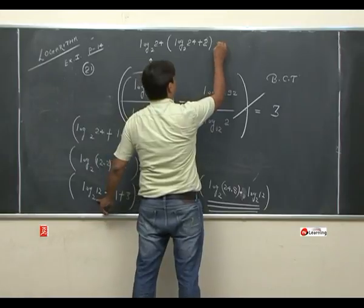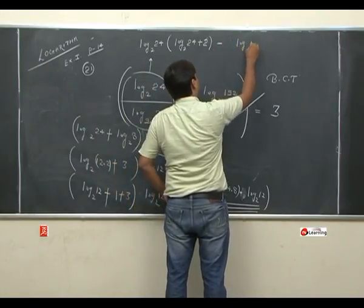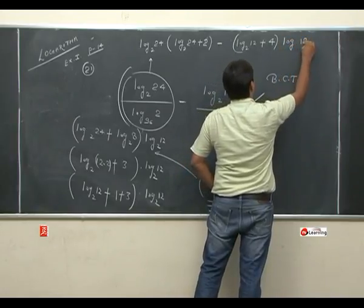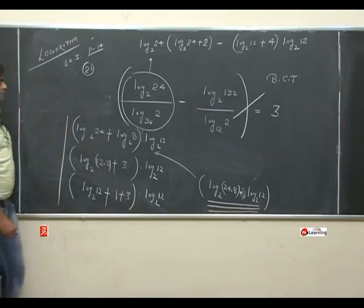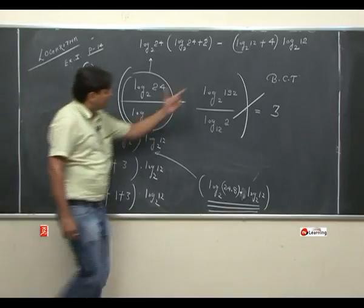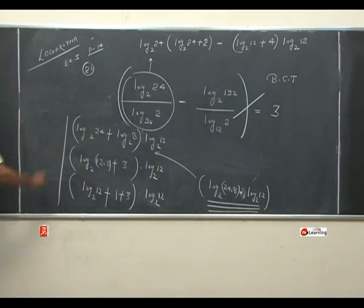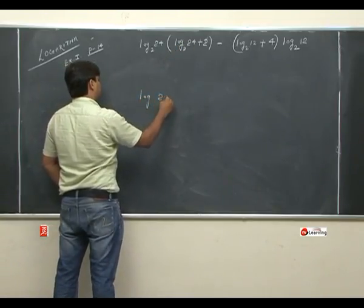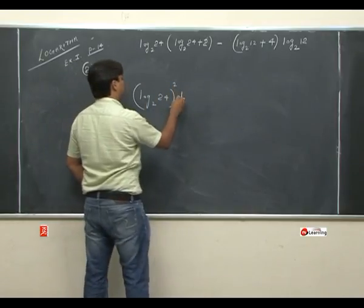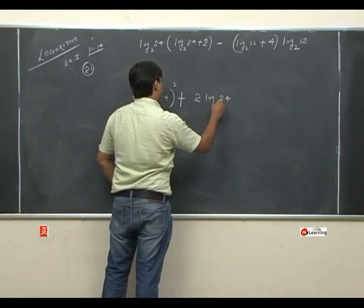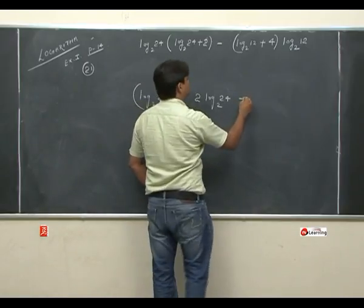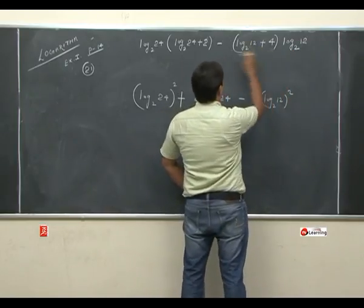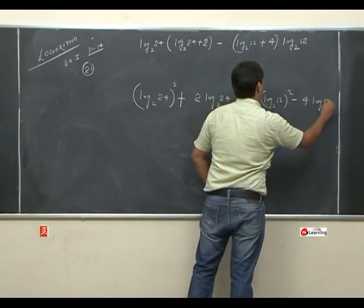तो मैं यहाँ लिखता हूँ: minus of [log 12 base 2 + 3 + 1], that is 4, into log 12 base 2. अब पूरा expression है: (log 24 base 2)² + 2 into log 24 base 2 — minus (log 12 base 2)² — 4 into log 12 base 2. अब log 24 को मैं लिख सकता हूँ 12 into 2, तो into plus में convert होगा: log 12 base 2 + log 2 base 2 = log 12 base 2 + 1.